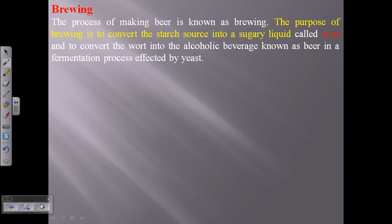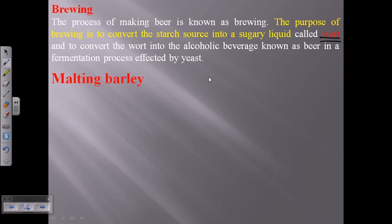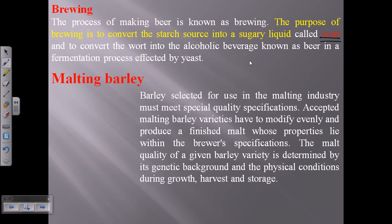Let's talk about brewing in a bit more detail. The process of making beer is simply called brewing. Once we get everything into the water, the extract from the hops and the extract from the malt is called wort. So that watery part containing all the important sugary materials to be fermented is called wort.